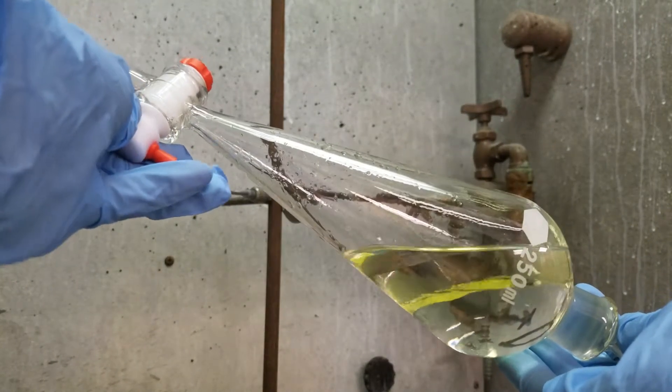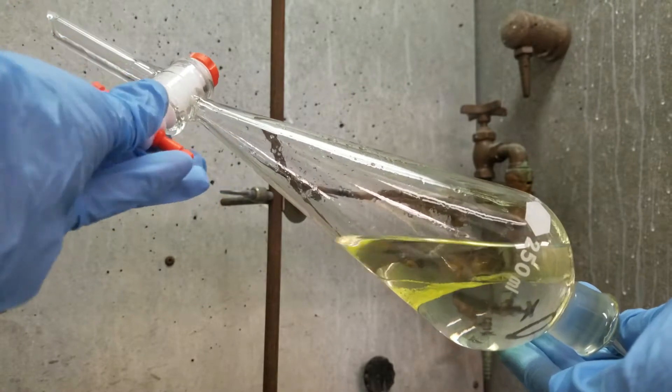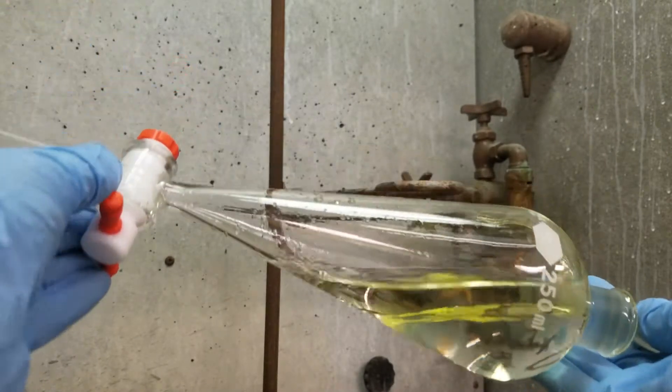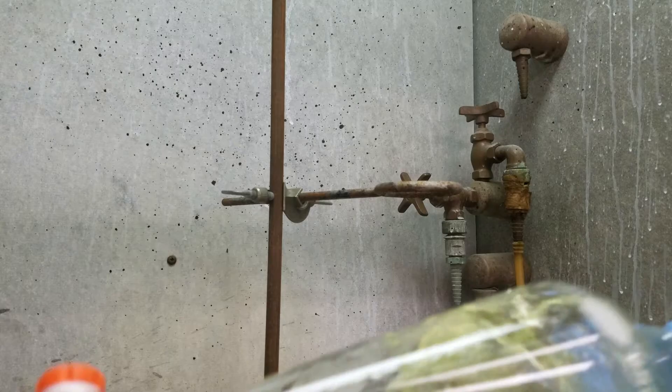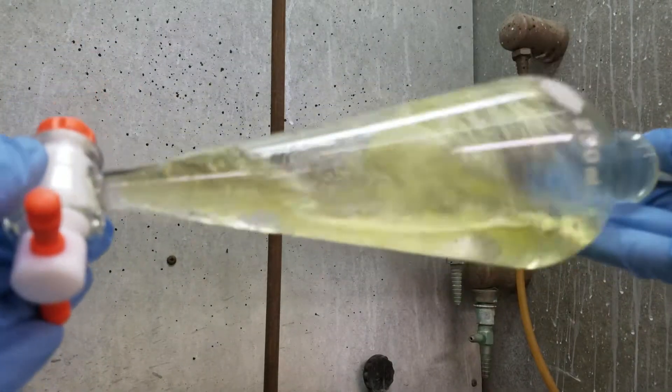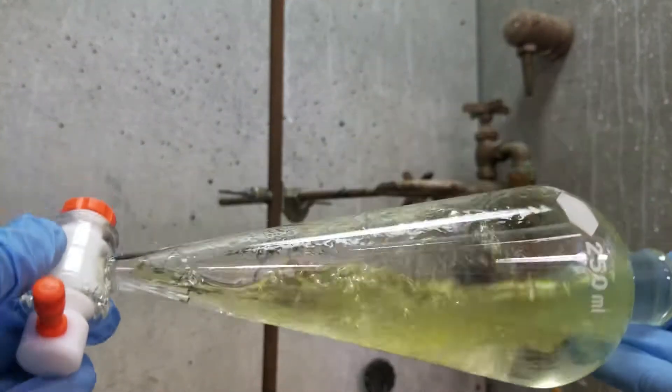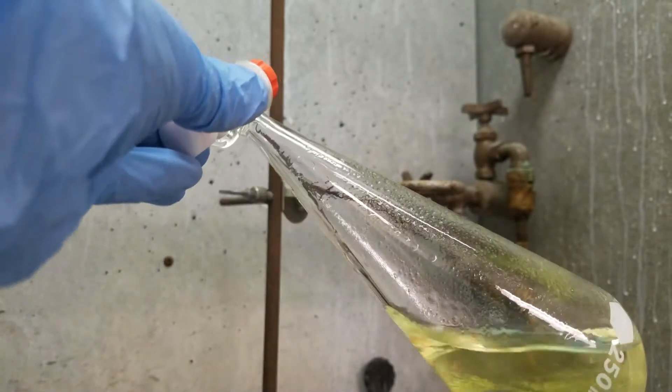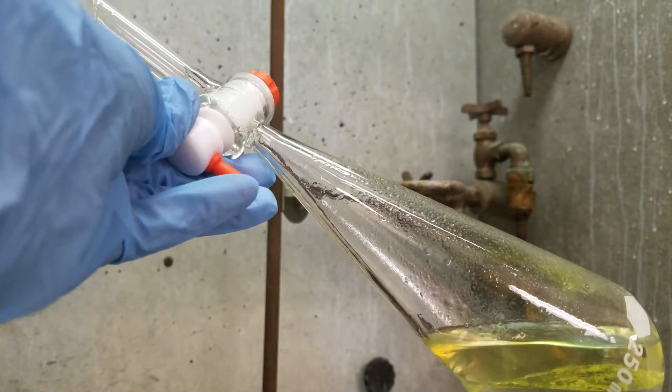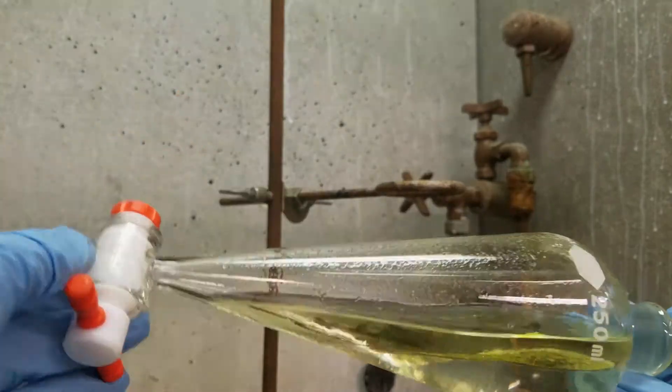Slowly open the stopcock and allow for any pressure built up in the separatory funnel to be released. Once pressure has been released, close the stopcock and shake the separatory funnel. Again, invert the separatory funnel and release any gas that is built up. Repeat this process several times until pressure is no longer released when opening the stopcock.